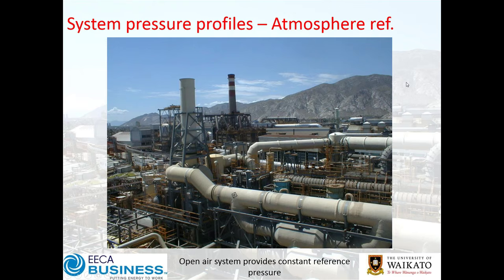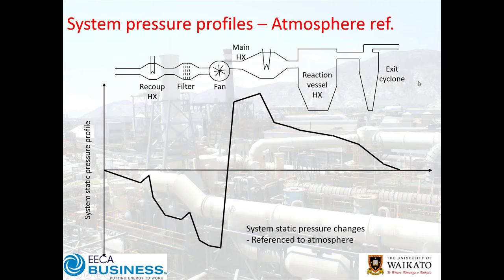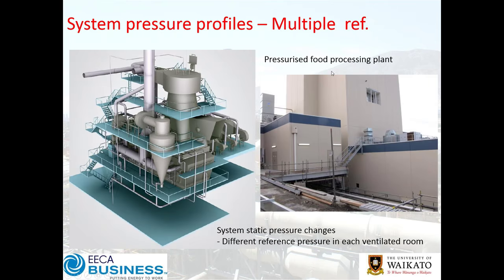The atmospheric reference is worth noting. In a system with a recuperator, filter, fan, heat exchanger, reaction vessel, and cyclone, the static pressure changes at each component, starting and ending at atmospheric pressure — so everything is relative to atmosphere. When the plant is in a building, different parts can be in different segments at different static pressures.